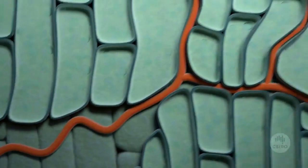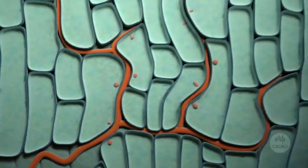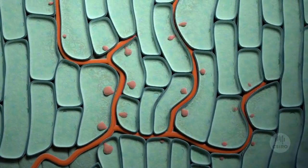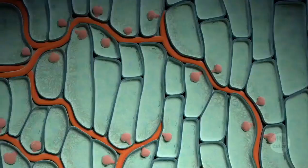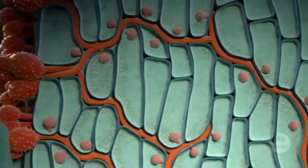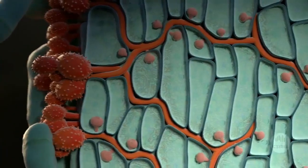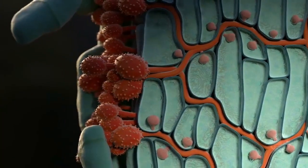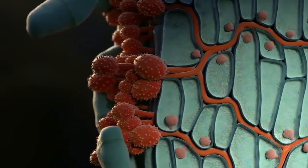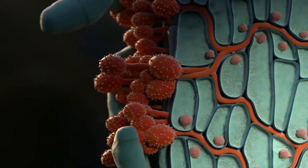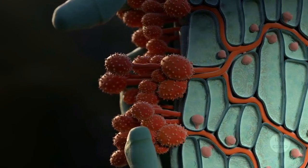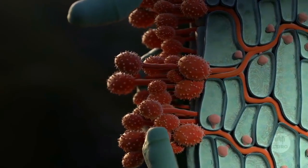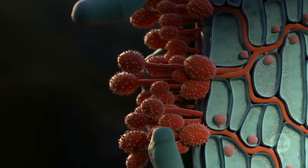The invading rust fungus has penetrated deep inside the plant tissue. As the invasion progresses, the fungus produces spores. These spores erupt from the surface of the plant.